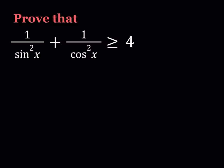So we have 1 over sine squared x plus 1 over cosine squared x is greater than or equal to 4. That's what we're supposed to prove. Sine squared x means sine x quantity squared, so we can write sine squared x as sine x to the second power. And the same thing goes for cosine squared x.